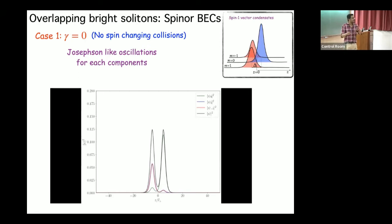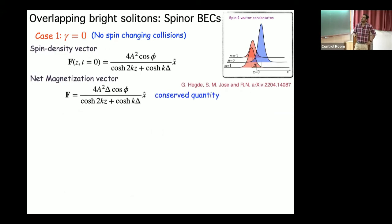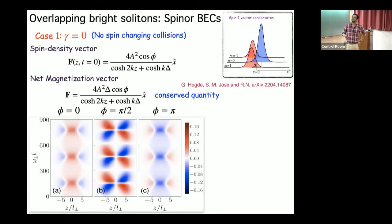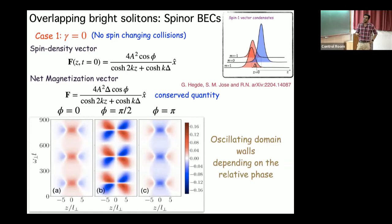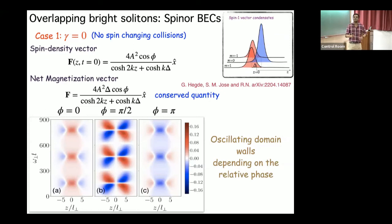We found that the density dynamics is independent of the relative phase, but the magnetization dynamics depends on the relative phase. In the spin dynamics we see oscillating domain walls — so the interest of spin-one bright solitons lies not only in real-space dynamics but also in spin-space dynamics, where you observe interesting features like oscillating domain walls.